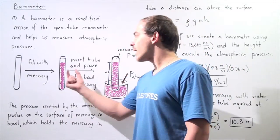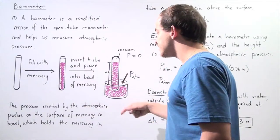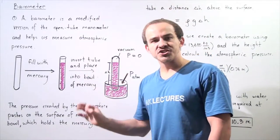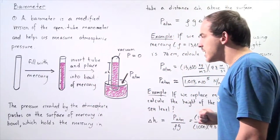Next, we take our tube filled with mercury, we invert the tube and place it into a bowl that also contains that fluid, in this case mercury.